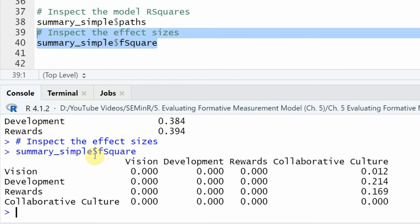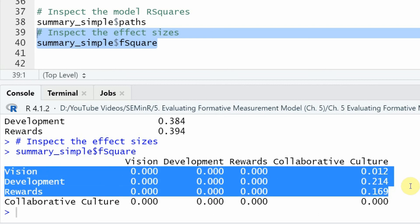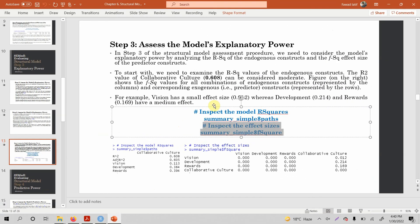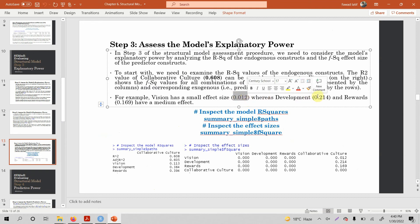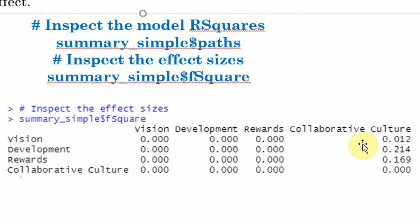What do we mean by F-square? F-square means that if we were to remove an exogenous variable, how does this impact the R-square value — is the impact small, medium, or large? A value less than 0.15 is considered small, values around 0.15 to 0.35 are medium, and anything above 0.35 can be regarded as large. Removal of vision from this model will have a small impact on the R-square, whereas removal of development and rewards will have a moderate impact on the R-square values. This is what we mean by R-square and F-square and how they are interpreted.